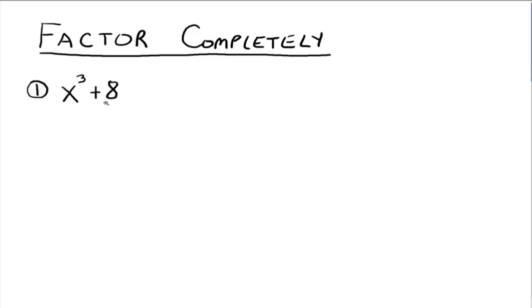Clearly the difference of two cubes is not an option, so the question is: is this the sum of two cubes? We notice we've got something cubed plus 8. Can we think of 8 as something cubed? Yes — 2 cubed. So this is really x cubed plus 2 cubed. We've got our two somethings: the x and the 2. The binomial part will be the first something, and since this is the sum of two cubes, we have a plus, then the second something, which is 2.